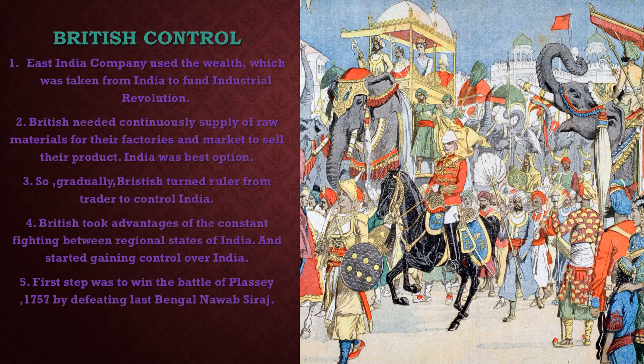The first step to control India was the Battle of Plassey. In 1757, it was fought between Robert Clive and Siraj ud-Daula. Siraj ud-Daula was defeated in this battle and finally Bengal was captured by the East India Company.